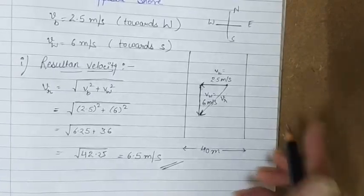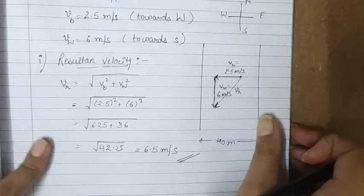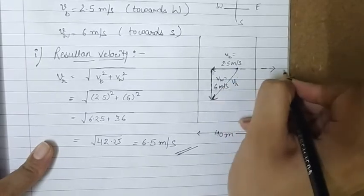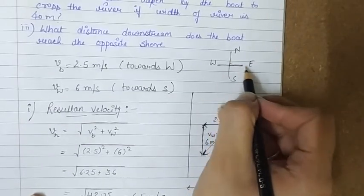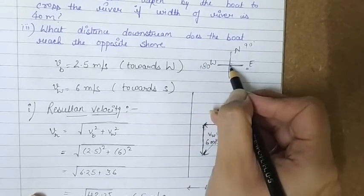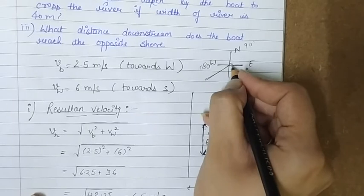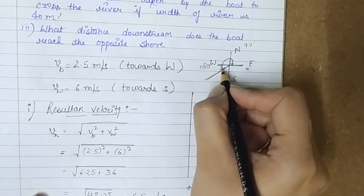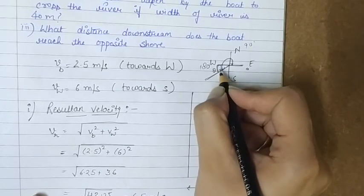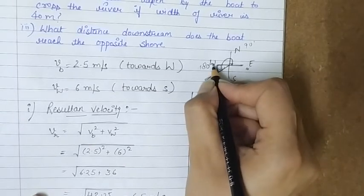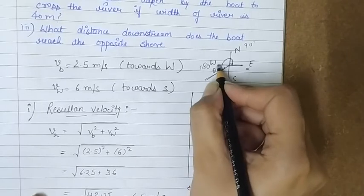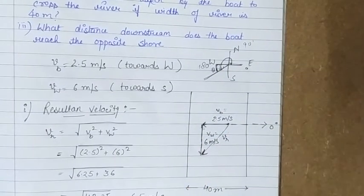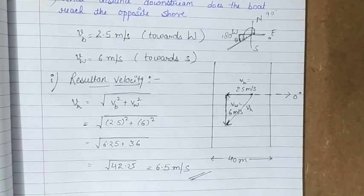Now let's talk about the direction. We take a reference axis: east is 0 degrees, going around to 90, 180. Our resultant is somewhere in that region, so we need to find the angle theta. This angle theta is measured from west towards south. Alternatively, the full angle from 0 degrees is pi plus theta radians, depending on the reference point we are considering.